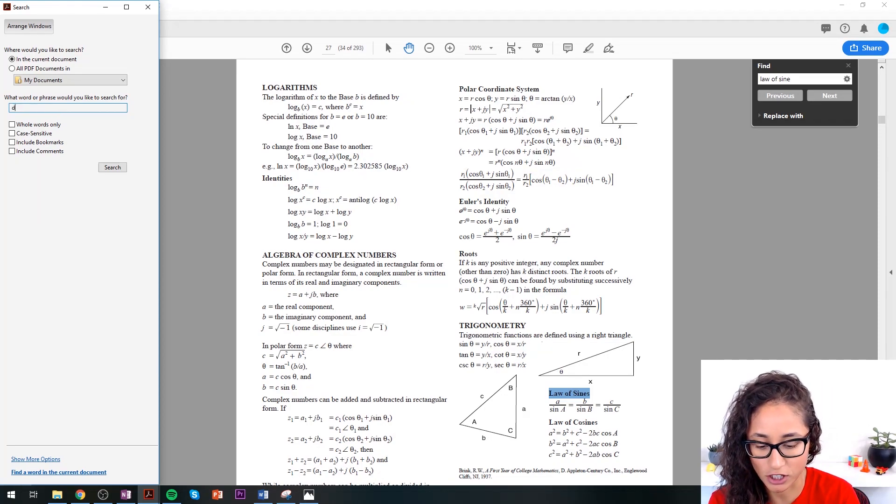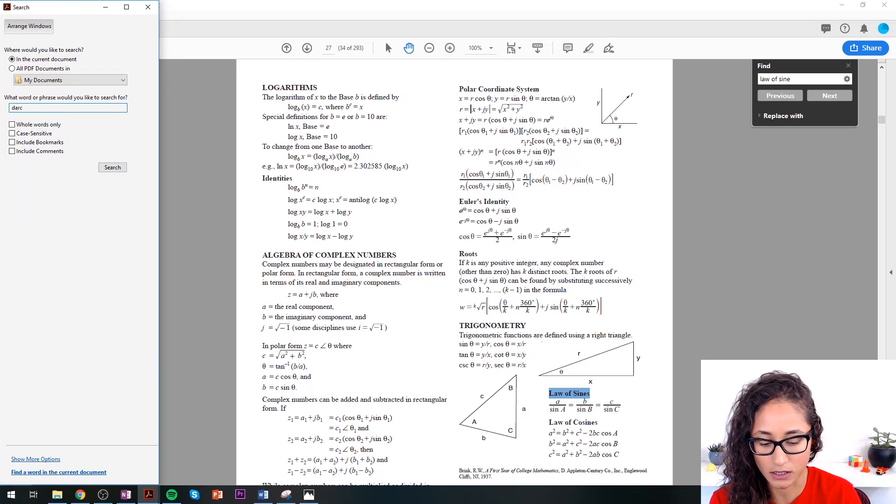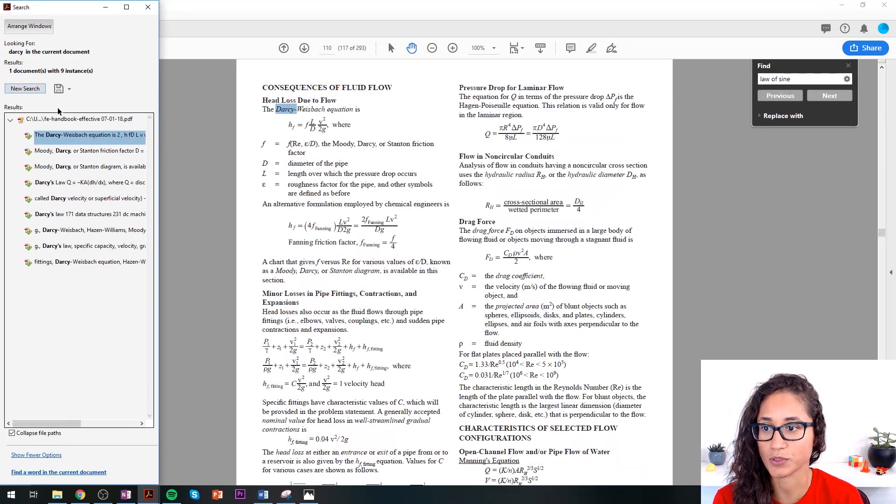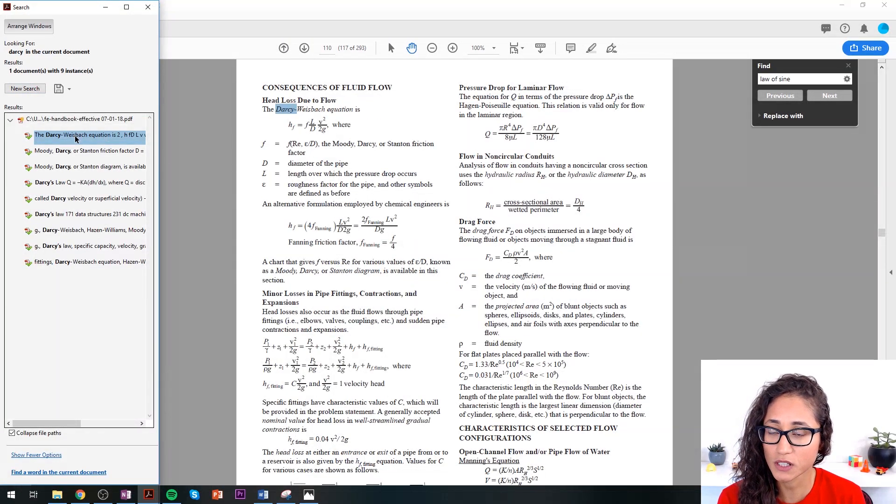So let's do, for example, Darcy. I think Darcy is very common. There is Darcy in every topic. So here we go. We have Darcy in fluids. So if you're dealing with Darcy in fluids and you know there's Moody charts and stuff, you know it's going to be one of these.